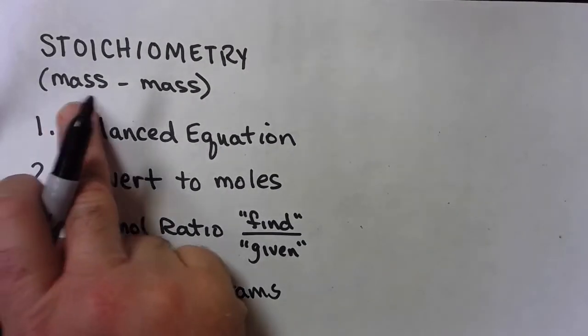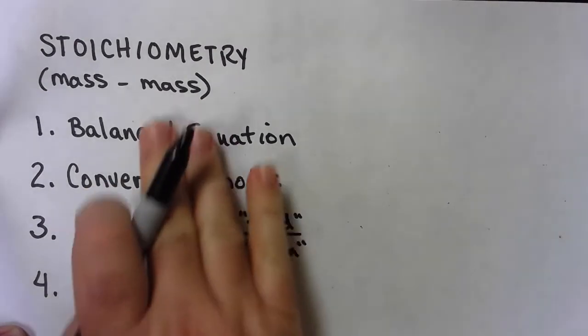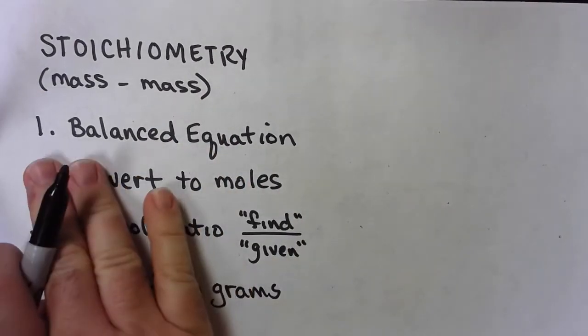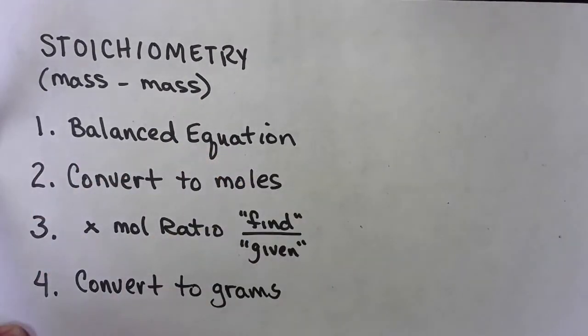Stoichiometry, we're going mass to mass. Here's the steps that I have my students go through. First, we need a balanced equation. If you don't have a balanced equation, you might as well give up. You're not going to be able to do stoichiometry.